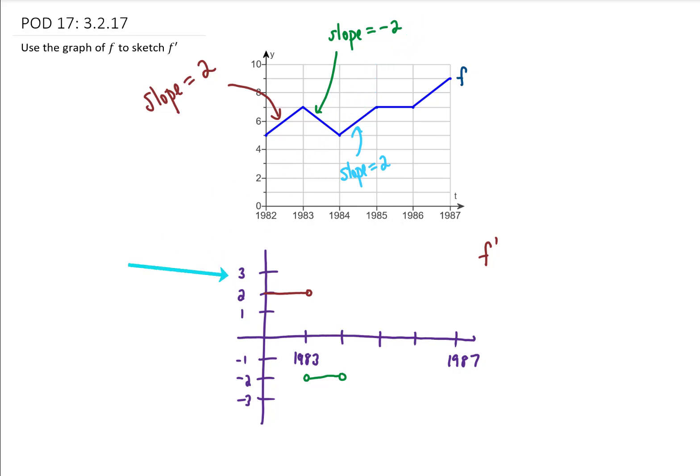We can then move on to the next segment, between 1985 and 1986. The graph of our original function has a slope of 0. That means down here in our derivative graph, the value of our derivative is going to be 0.